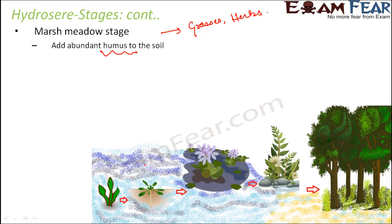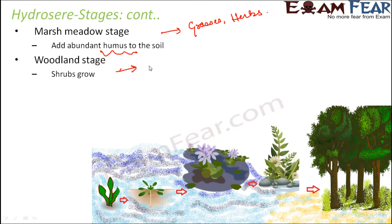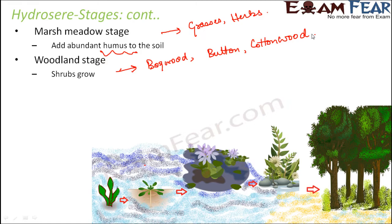The next stage is the woodland stage, where shrubs appear. Shrubs are medium-sized plants that can tolerate bright sunlight and waterlogged conditions — like rose plants. Examples of shrubs in this stage include bogwood, buttonbush, and cottonwood. This stage is called the woodland stage because shrubs have woody stems.